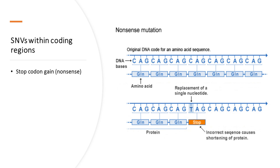SNVs within coding regions tend to have larger effects than other variations and have been studied the most. In the more severe cases, an SNV can cause a premature stop codon that terminates a protein early. In the example shown, the cytosine nucleotide is changed to thymine; as a result, the codon CUG that used to encode glutamine now becomes TAG, which is a stop codon, resulting in premature termination of the protein. This SNV is called a nonsense mutation. Because a nonsense SNV causes premature termination of a protein, it is usually predicted to be damaging, even though there are exceptions where paralogous proteins or alternative pathways can compensate for the loss.